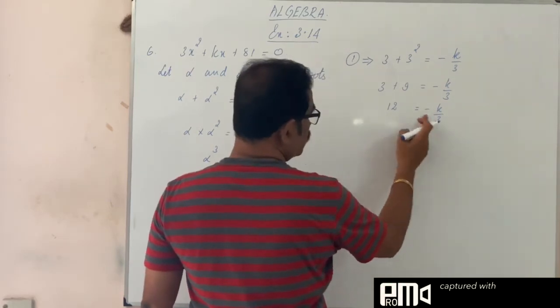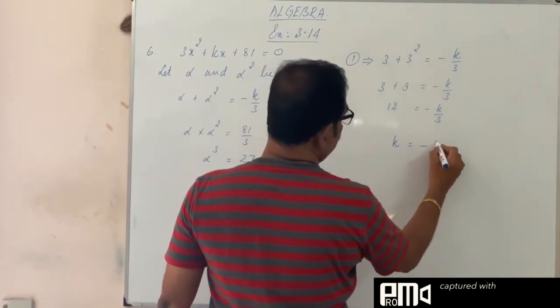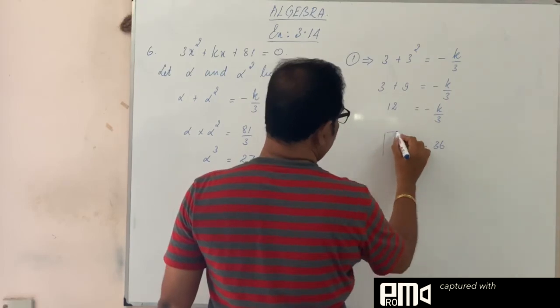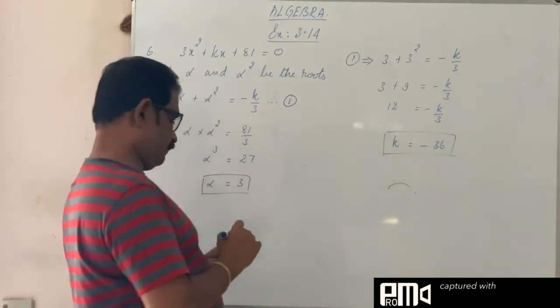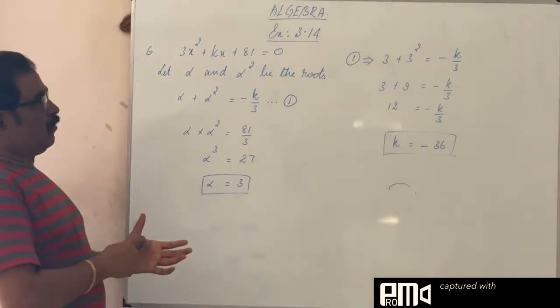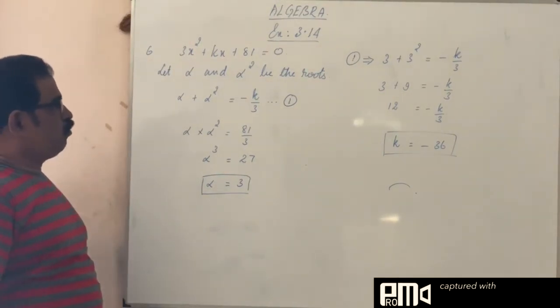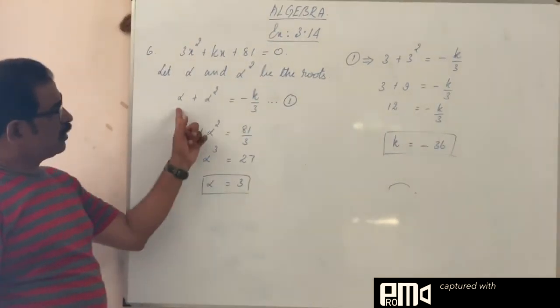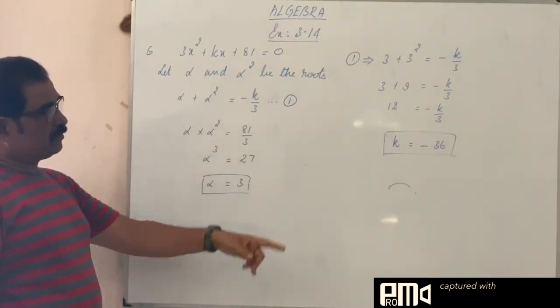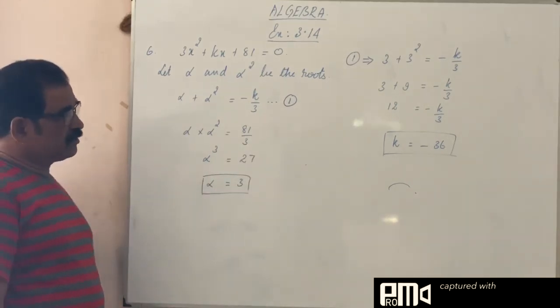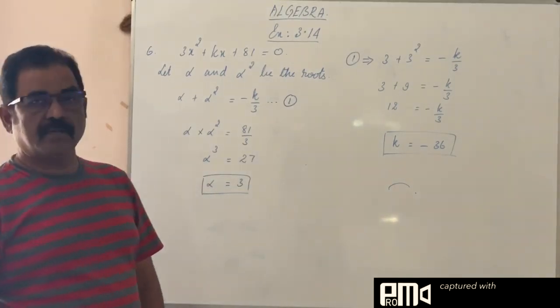So 3 comes to this side, 12 times 3. So k is equal to minus 36.